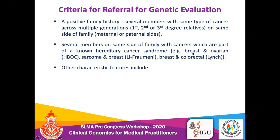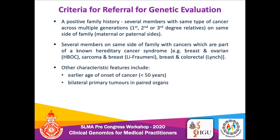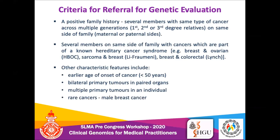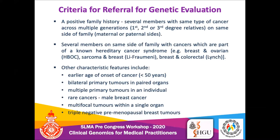Other features of hereditary cancers include early age of onset, usually less than 50 years; bilateral primary tumors in paired organs like breast or ovary; multiple primary tumors in one individual; rare cancers like male breast cancer; multifocal tumors within a single organ; and triple-negative breast cancer, especially in the pre-menopausal stage. These are the criteria you should consider for referral.